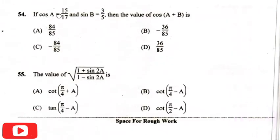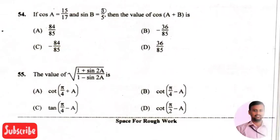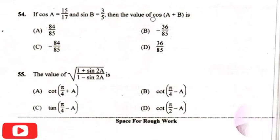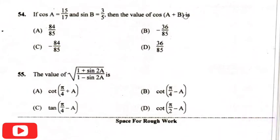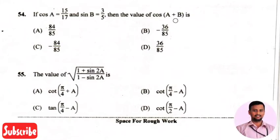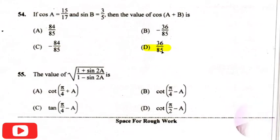If cos A equals fifteen by seventeen and sine B equals three by five, then the value of cos (A plus B) — the right answer is option four, that is 36 divided by 85.